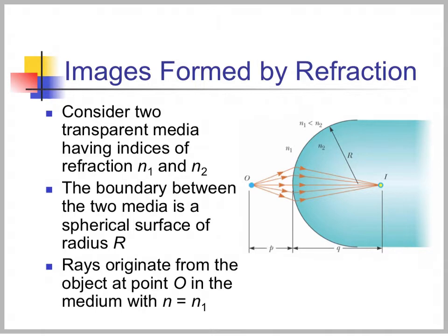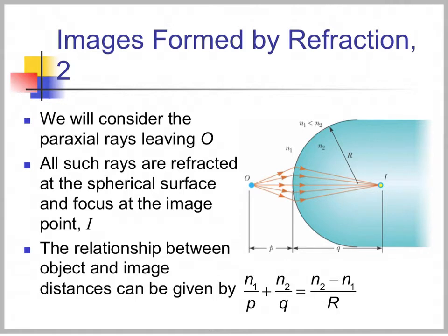Before we begin thin lenses, we have to talk about how images form due to refraction. Let's look at two transparent media that have indices of refraction N1 and N2. The boundary between the two media is a spherical surface of radius R. The rays are going to originate from some object O in the medium N1. We're going to consider paraxial rays leaving the object, and all such rays are refracted at the spherical surface and focus at image I. The relationship between the object and image is given by N1 over P plus N2 over Q equals the difference of them over R.